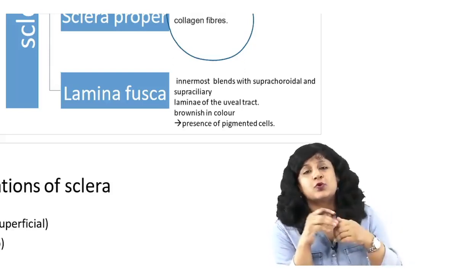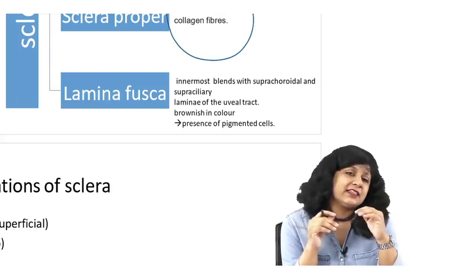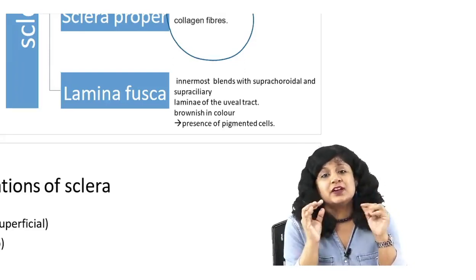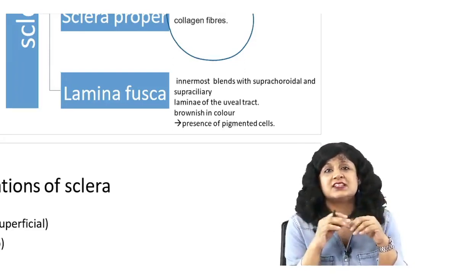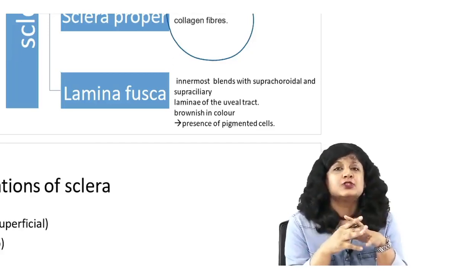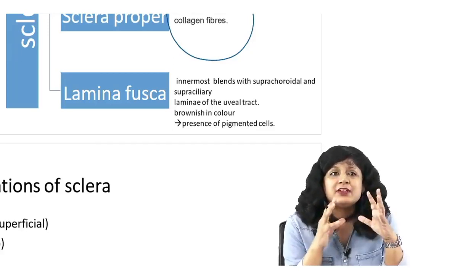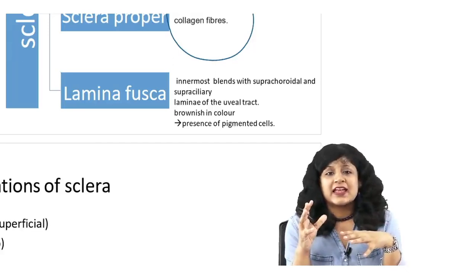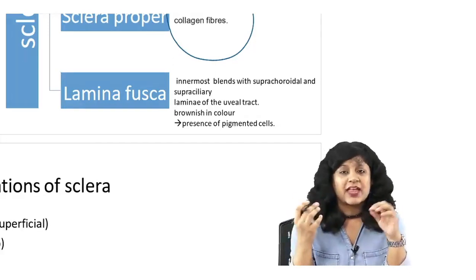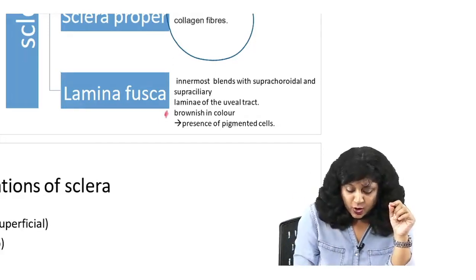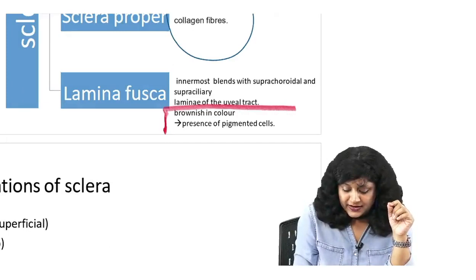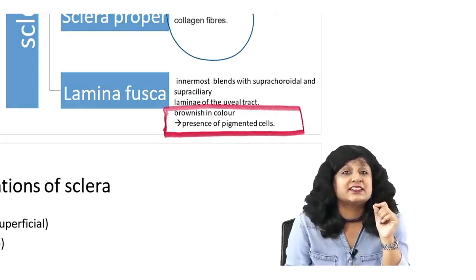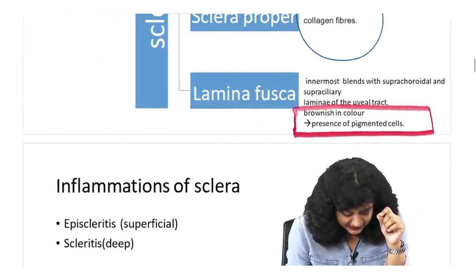The sclera proper is again an avascular structure — a very dense tissue that gives you tensile strength. Dense bundles of collagen fibers are there and it is avascular. Then we have the lamina fusca, the innermost layer, which blends with the suprachoroidal and supraciliary spaces. It is brownish in color because of the presence of pigmented cells.